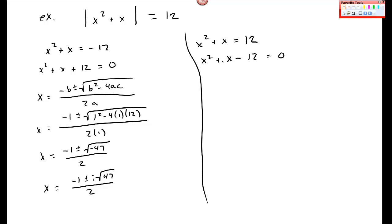And then I come over here, this one is the factorable one. I think x plus 4 and x minus 3 here. So x is equal to negative 4 and x is equal to 3.